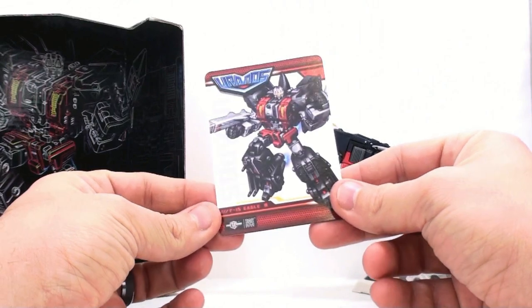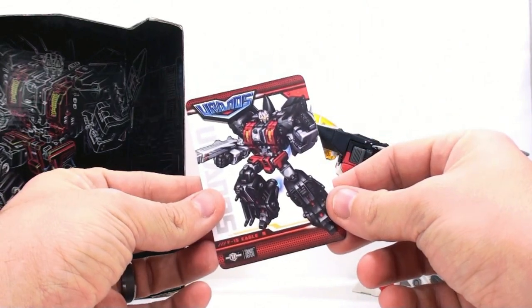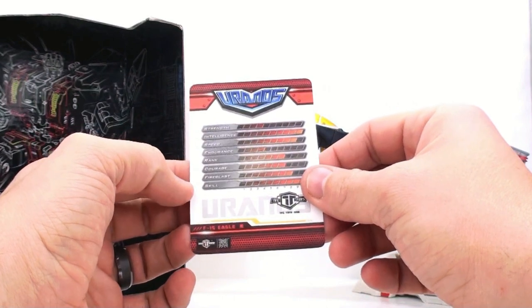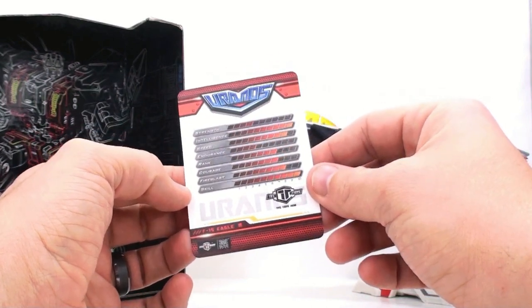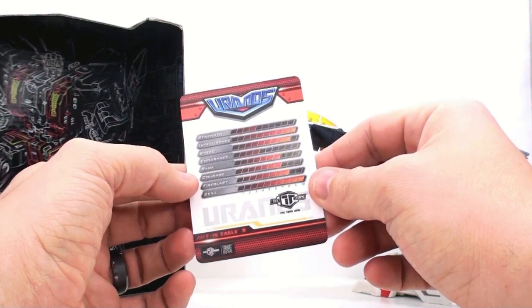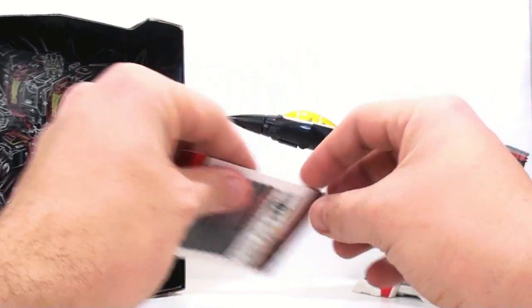With all the previously released figures from TFC Toys, they come with this nice kind of tech spec card. Flip around here on the back, you have Strength, Intelligence, Speed, Endurance, Rank, Courage, Fire Blast, and Skill. And this dude has a really high intelligence, all the way to 10. That's actually pretty good. Skill also of 10.